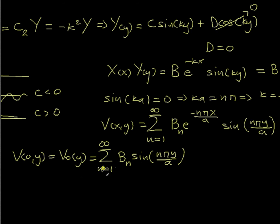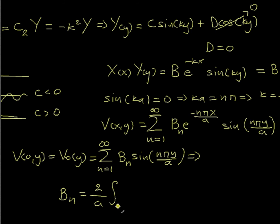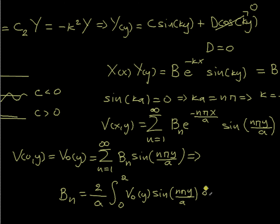From this last boundary condition I get the coefficients B sub N. I have already determined the exponential e^(-nπx/a) and the sine nπy/a. The last thing to determine is the coefficient B sub N, and I can use Fourier's trick. This gives B sub N equals 2 over a times the integral from 0 to a of V0(y) times sin(nπy/a) dy.